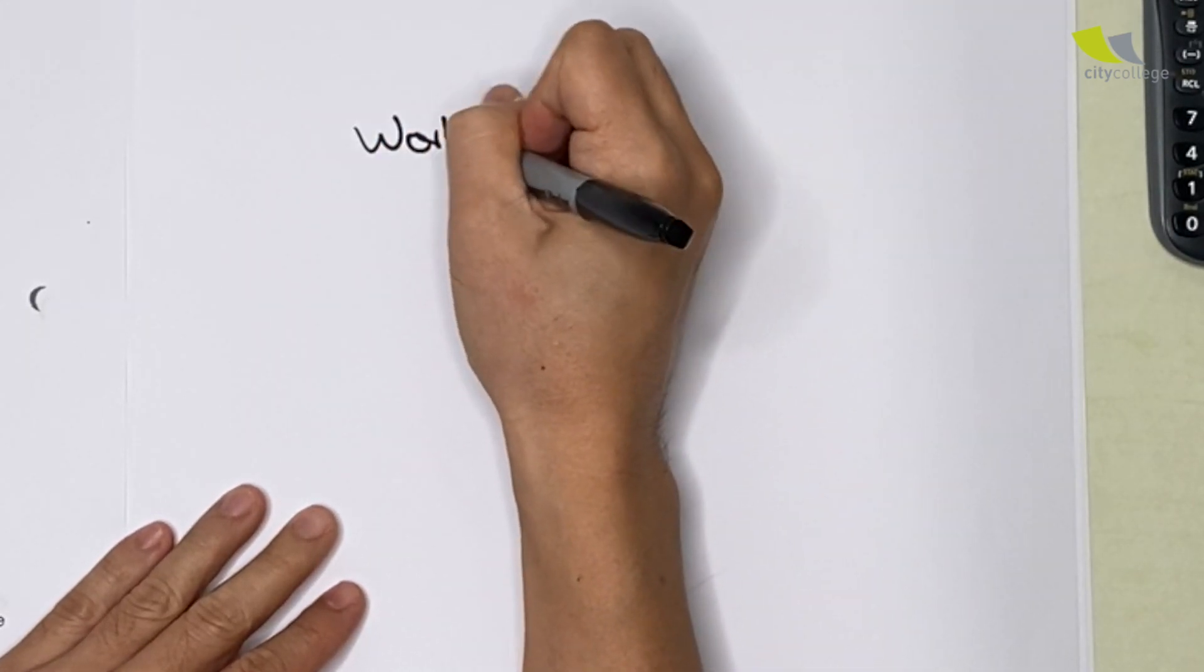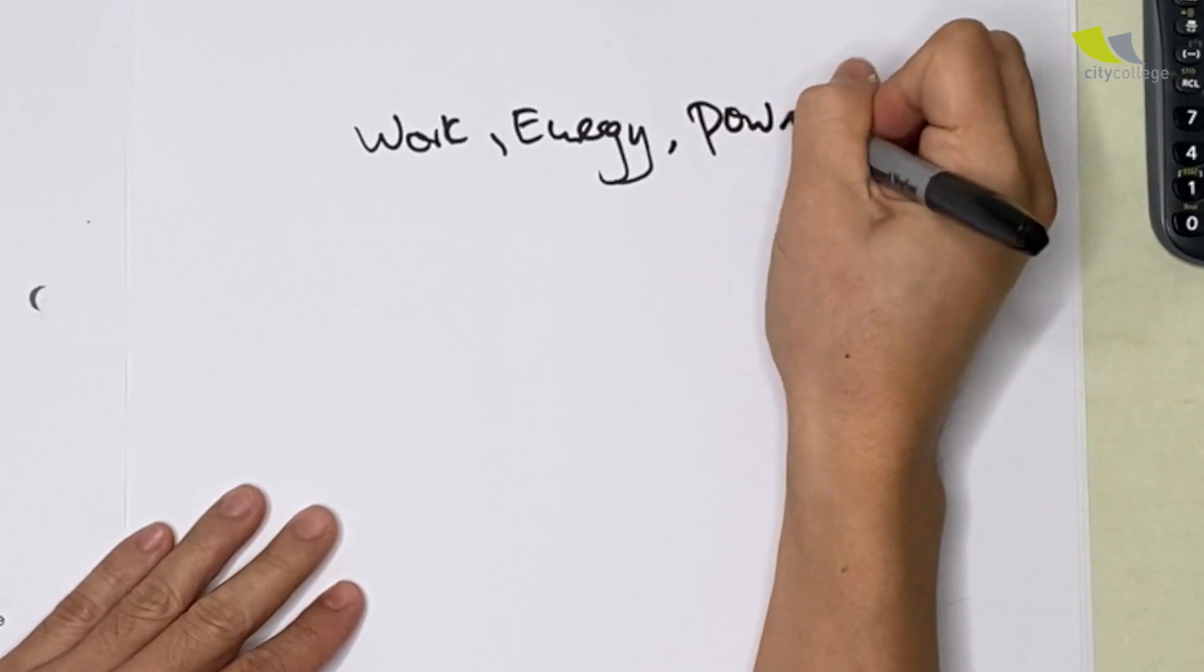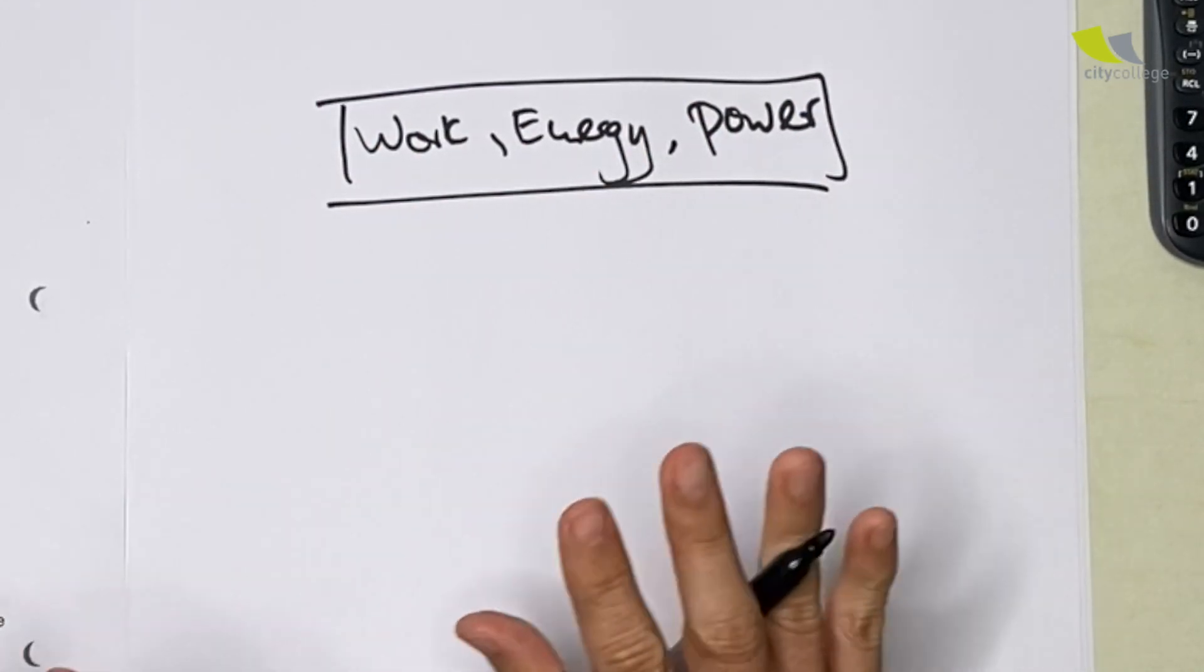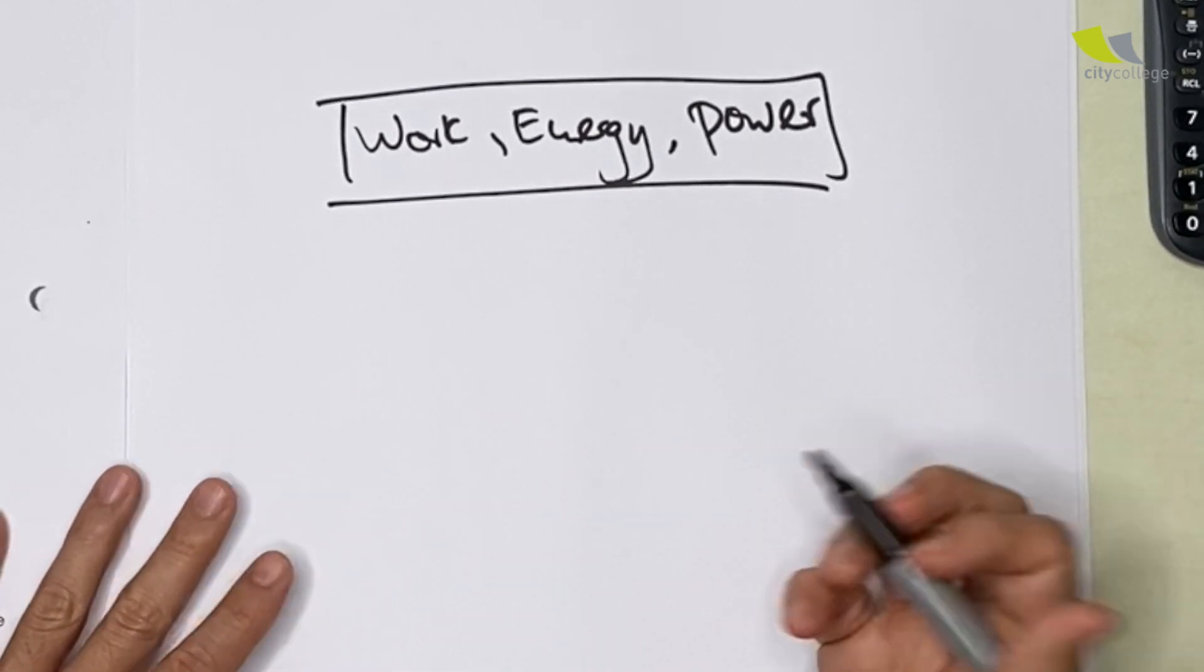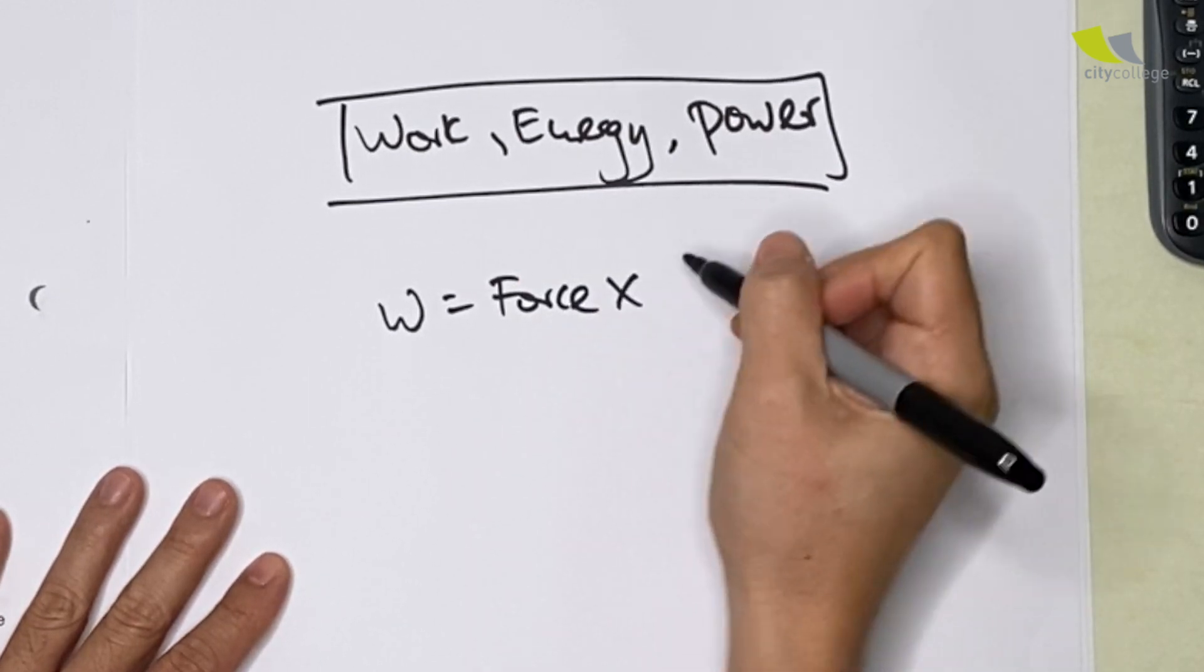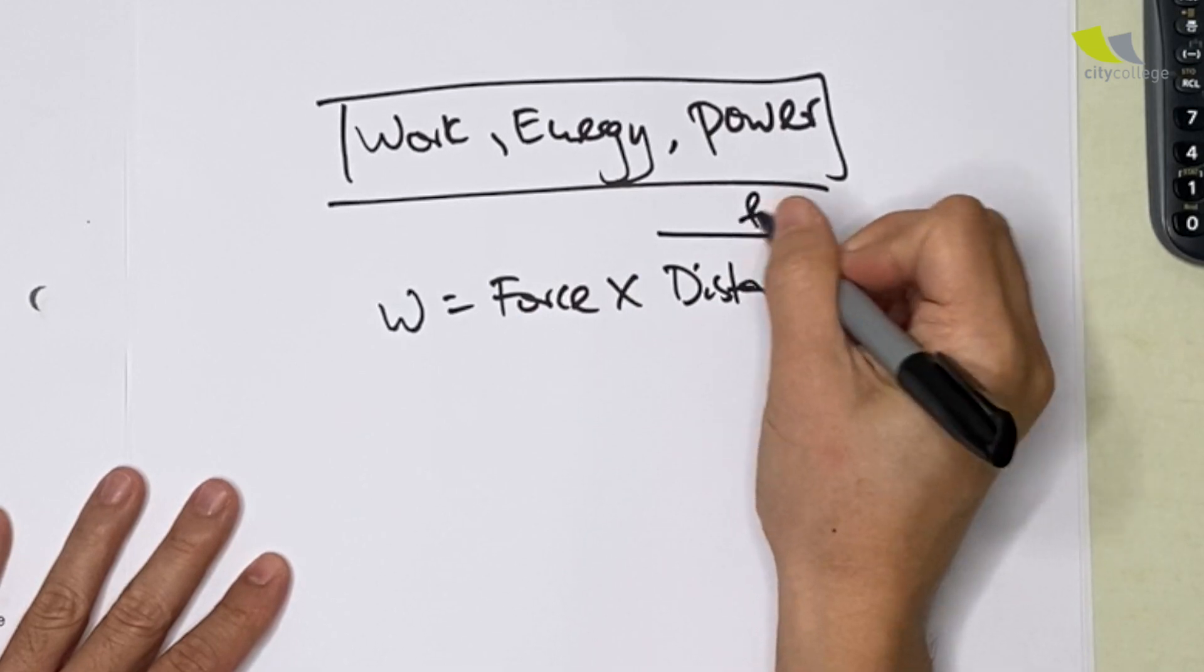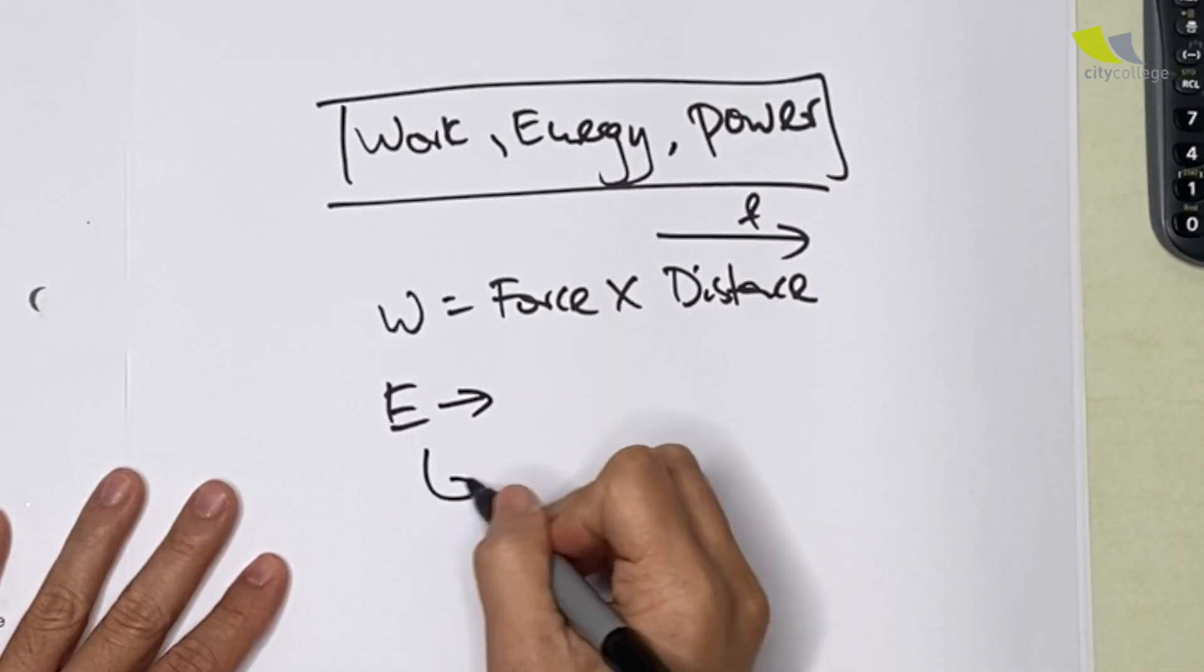Now let's look at work, energy, and power. The questions that come out for this topic are fairly straightforward. They just need you to remember the formulas. So work is equals to force multiply by distance in the direction of the force.